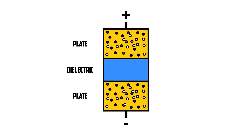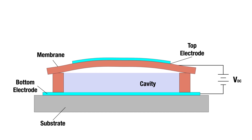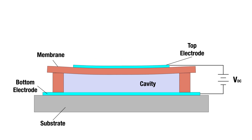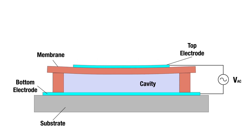The other type of transducer is capacitive. Capacitors have two conductive plates separated by a dielectric material. When connected to power, one plate gains electrons becoming negatively charged, while the second plate loses electrons becoming positively charged. In a capacitive transducer, one plate or electrode sits on a dielectric membrane suspended above a cavity in its silicon substrate, which acts as the second electrode. When current is applied, the electrodes become charged and the top plate is attracted to or repelled by the lower plate, moving the membrane. Applying an alternating current causes this to happen quickly, making the membrane vibrate and generate ultrasonic waves.